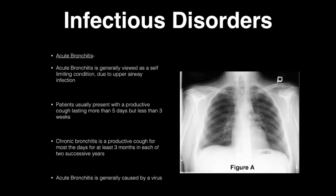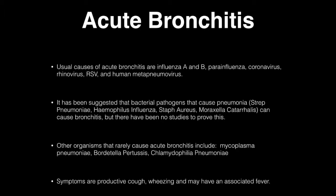Acute bronchitis is generally caused by a virus. Other causes include influenza A and B, coronavirus, RSV, and human metapneumovirus. Bacterial pathogens such as strep pneumoniae, Haemophilus influenzae, staph aureus, and M. catarrhalis have been suggested to cause bronchitis, but there are no studies to prove this.